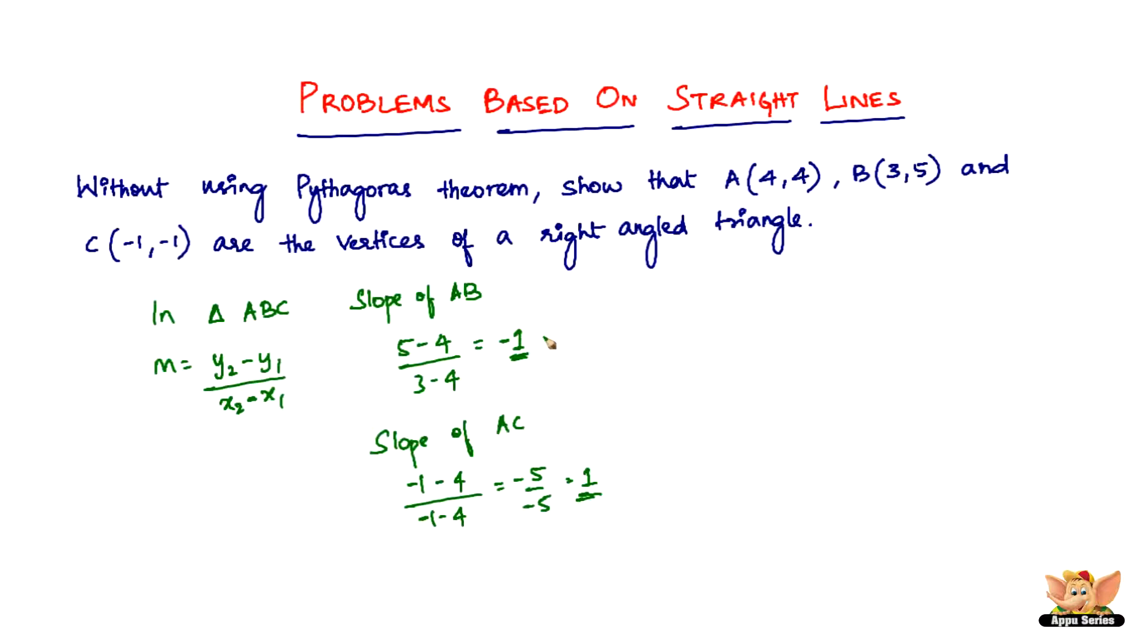Let's say this is m1, this is m2. So you can clearly see that m1 times m2 equals negative 1. So this shows that AB is perpendicular to AC.